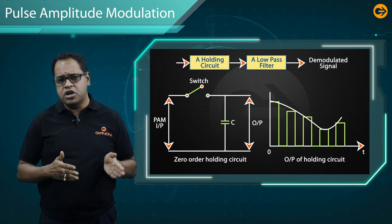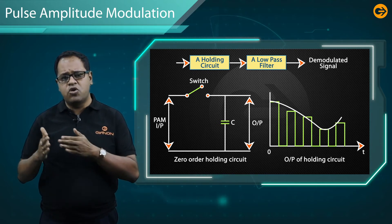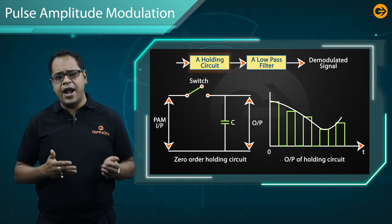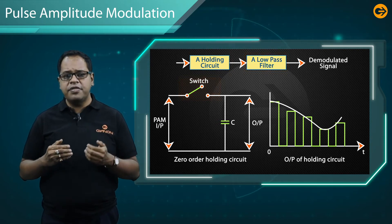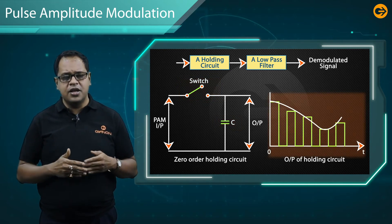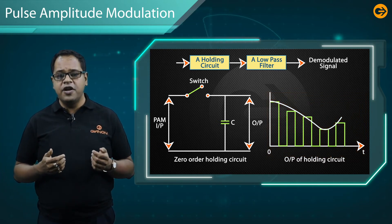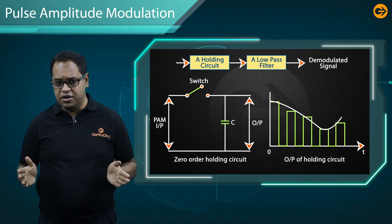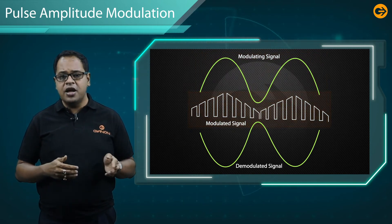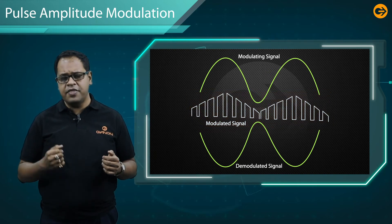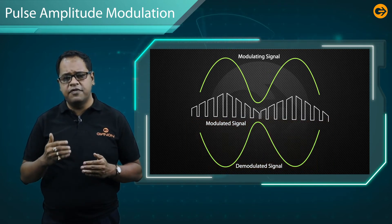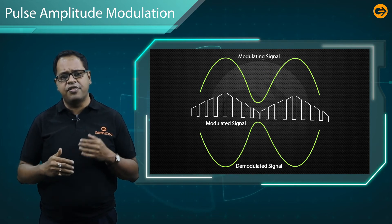The demodulation or detection of the pulse amplitude modulated signal uses a demodulator circuit consisting of a holding circuit and a low pass filter. The zero-order holding circuit is simply a switch and a capacitor. The low pass filter is used to regenerate the original message signal. After demodulation, the retrieved signal is essentially the same as the original transmitted signal.